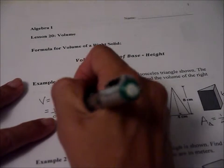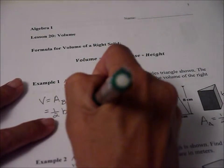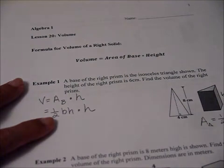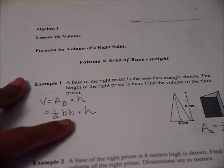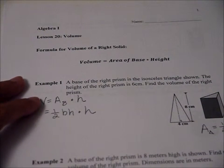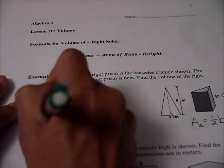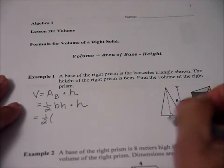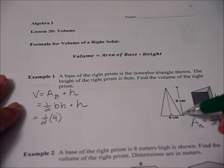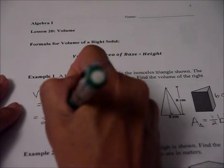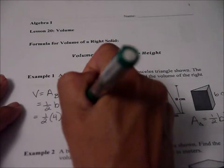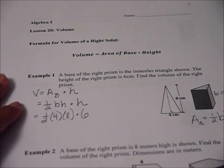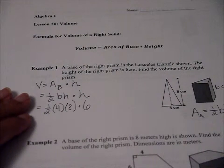The careful thing is do not confuse that h with this h. We could even do a big h if we wanted to, but make sure we don't get those confused or find the area of the base first and then bring it back to this formula. So let's plug in what we know. One-half, the base of this triangle is four. The height of this triangle from bottom to the top is eight, and the height of the prism is six.